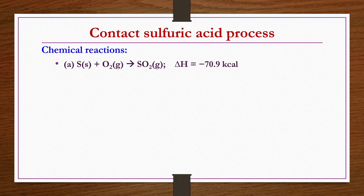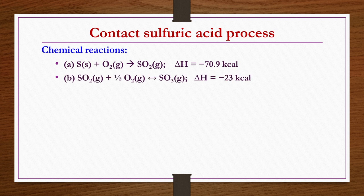Chemical reactions: elemental sulphur is oxidized to give sulphur dioxide. This SO2 is further oxidized to give SO3. The SO3 is dissolved in water to get sulphuric acid. This oxidation reaction is reversible, so kinetics and thermodynamic parameters play a vital role as engineering issues. One should be careful about such processes.